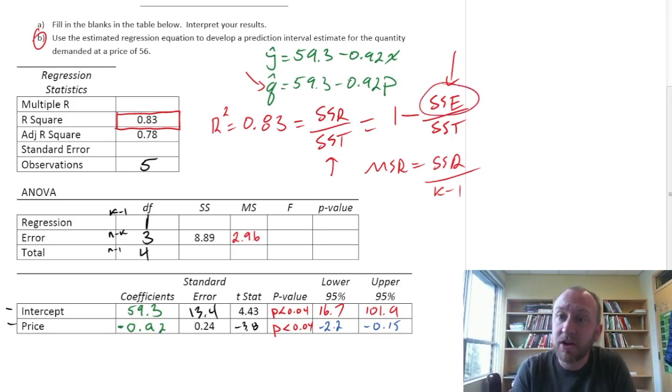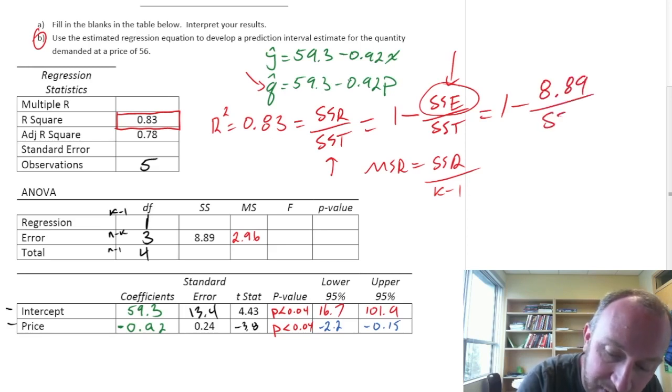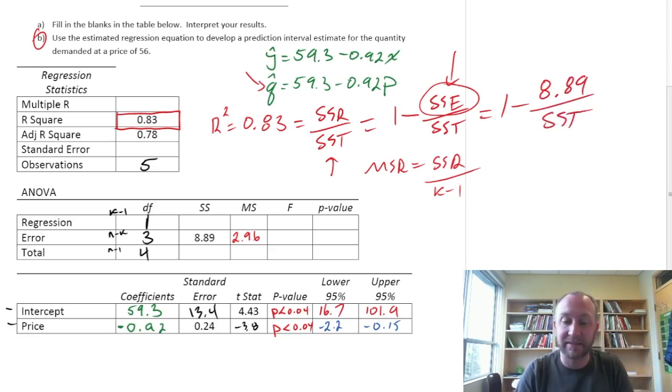SSE, random variation. So 1 minus the percentage of variation that we failed to capture will give us the percentage that we did capture. So in this case, well we have SSE is given to us 8.89 and so now we can solve for SST. So let me just clear some space up a little bit here.